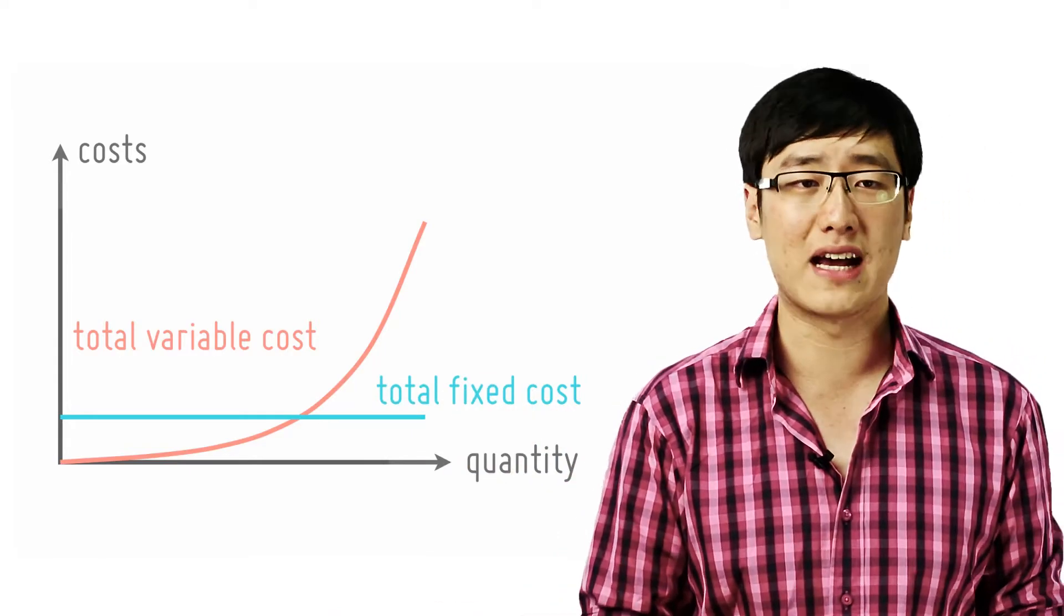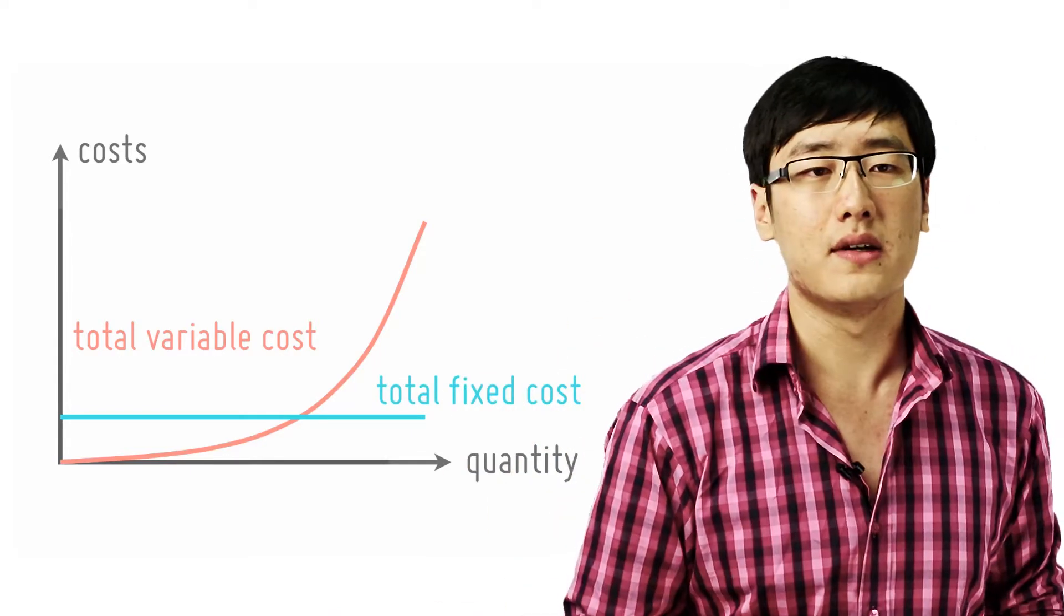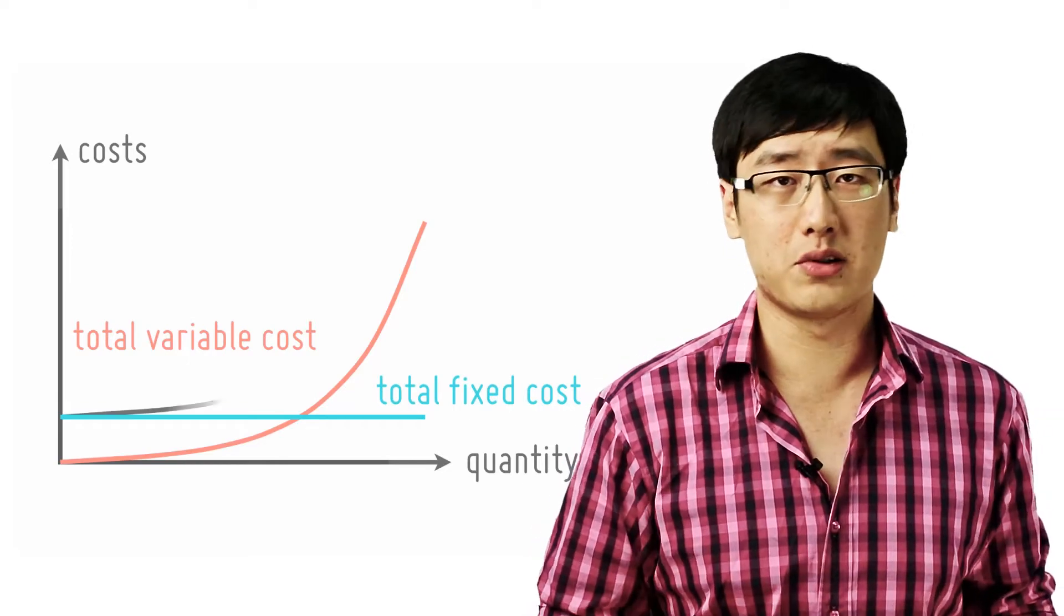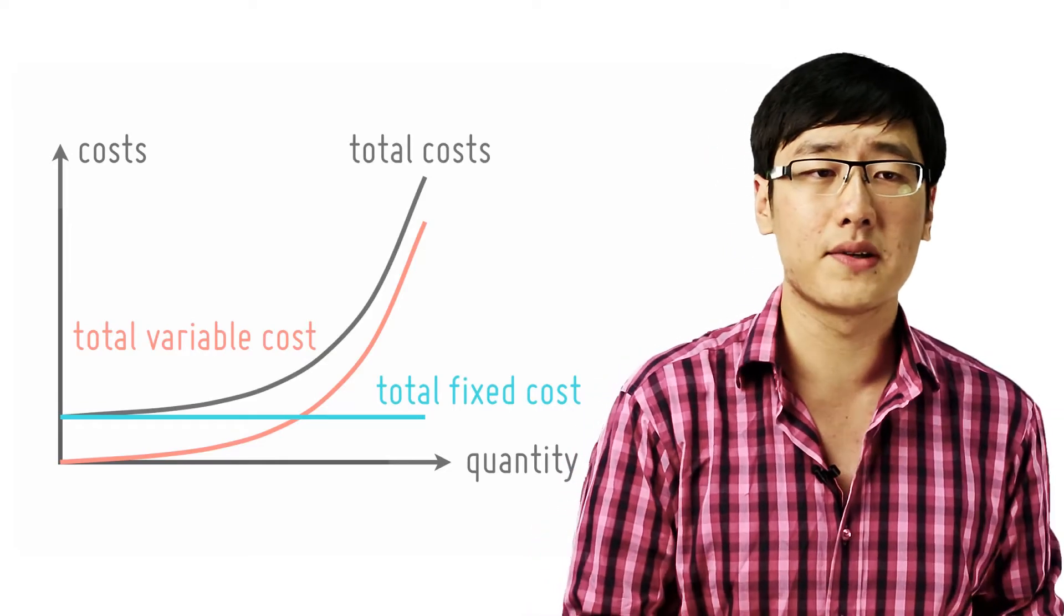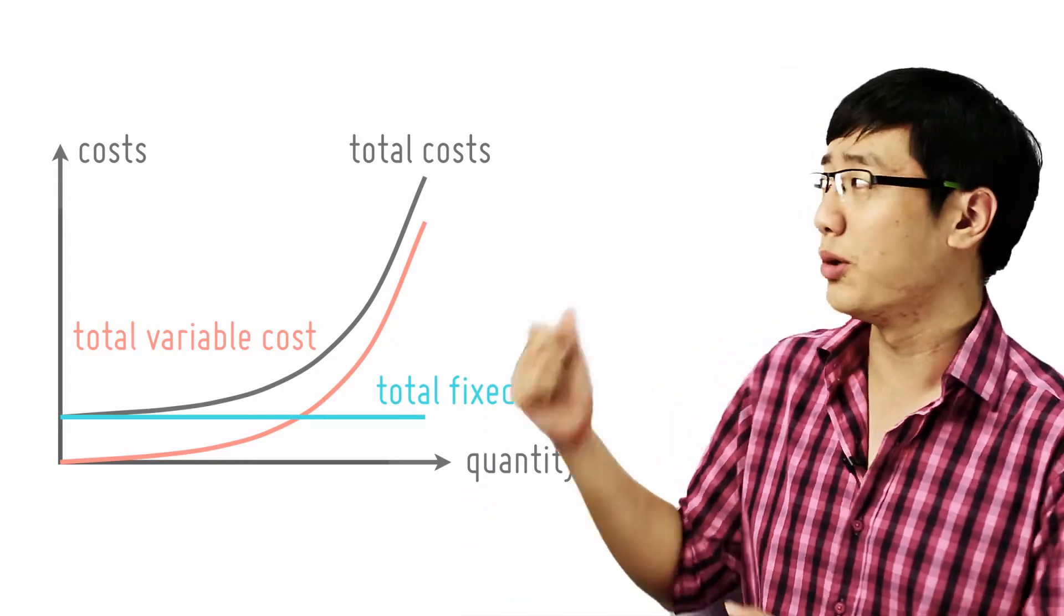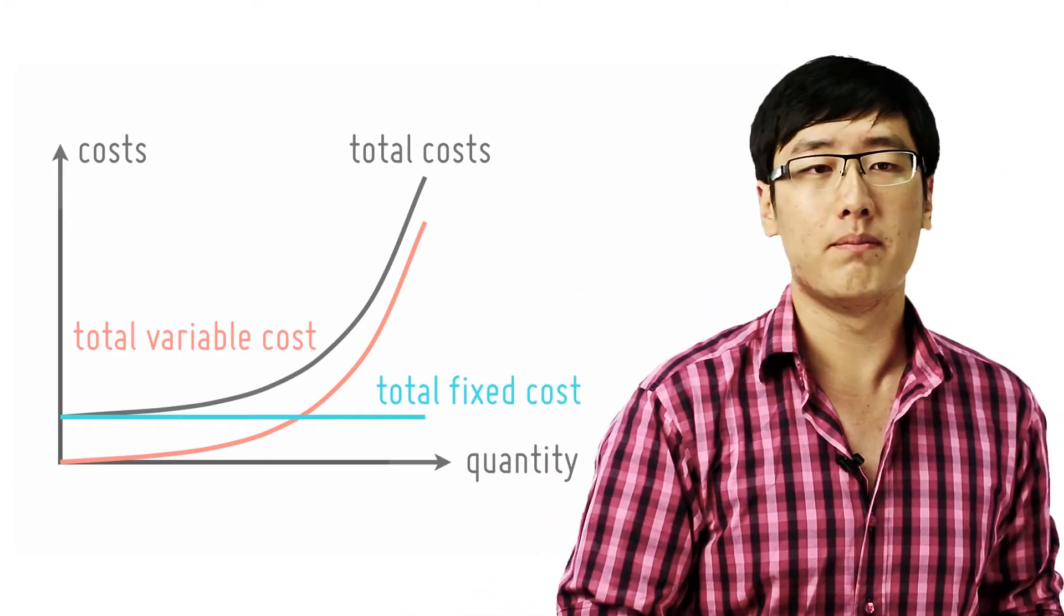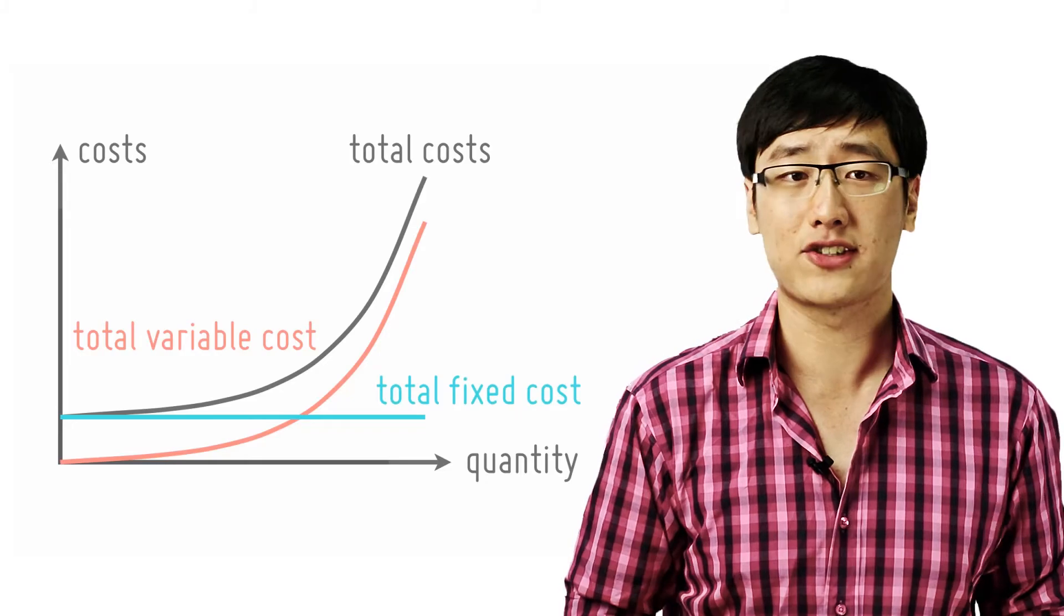This corresponds to the part of the production curve that rises less rapidly. Since the total cost equals the total fixed cost plus the total variable cost, the total cost curve is simply the total variable cost curve shifted up by the height of the total fixed cost.